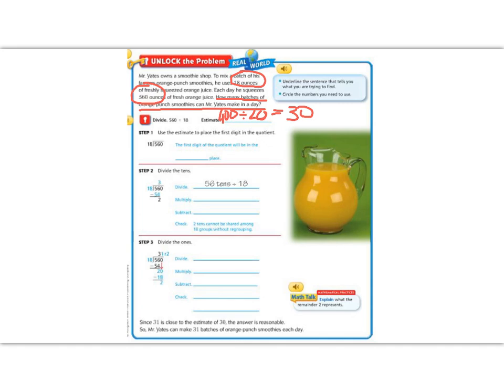So step 1, use the estimate to place the first digit of the quotient. We know that the first digit of the quotient is going to be in the tens place because 30 is in the tens place, not in the hundreds or the ones. So our first digit is going to be in the tens place. Now that we know that, let's go ahead and divide.